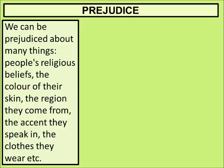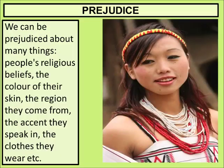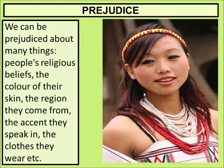We can be prejudiced about many things: people's religious beliefs, the color of their skin, the region they come from, the accent they speak, and the clothes they wear. For example, when we see someone with small eyes, we think they are Chinese, Japanese, or Nepalese. But that is not correct — in our Northeast there are seven states, and those people also have small eyes, but they are not Nepalese or Chinese. They are Indian. So we need to change our thinking.